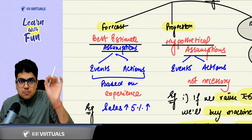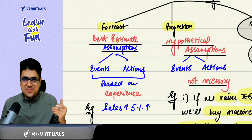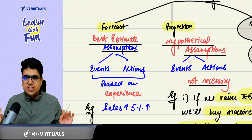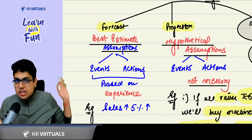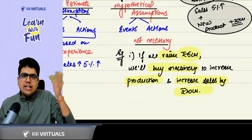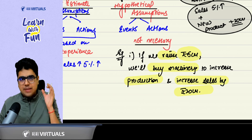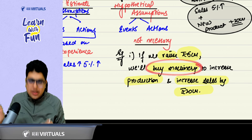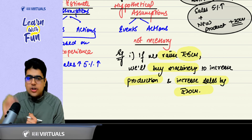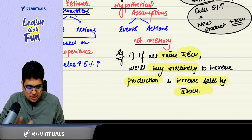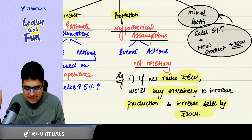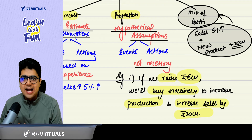What about a projection? In a projection, it is not a best estimate assumption — it is a hypothetical assumption. That means something will happen, some event will happen, and then we will take some action. These are not based on past experience. For example: we will raise 5 crore from a bank; when we raise that money the entity will buy machinery; when you buy machinery, people place orders, you start production, and you increase your sales by 20 crore. These are hypothetical assumptions.